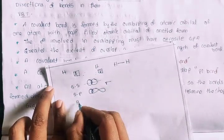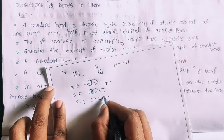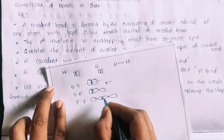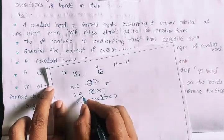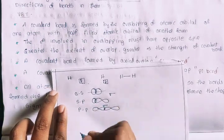Next, P-P overlap. Here is sigma bond. This is S-orbital, SP, PP — that is sigma bond. So SS, SP, and PP axial overlaps all give sigma bonds.